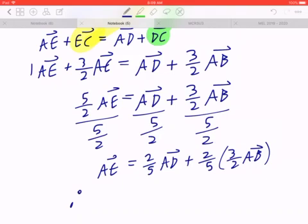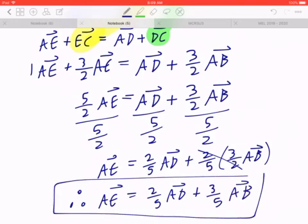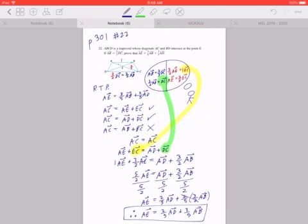Here comes the final answer. Therefore, AE equals 2/5 AD plus 2 divided by 2 is 1. This becomes 3 divided by 5 times AB. I hope this makes sense.